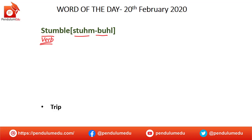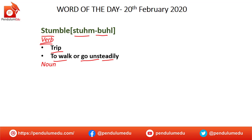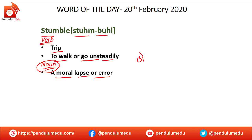Now let's see the meaning. The meaning is trip, to walk or go unsteadily. Also this is used as a noun. Yeh ek noun ki tarah bhi use hota hai. And as a noun is ki meaning hai, a moral lapse or error. Jahan hum is ki hindi meaning ki baat kare, toh is ki hindi meaning hai thokar, yaa phir ganti.